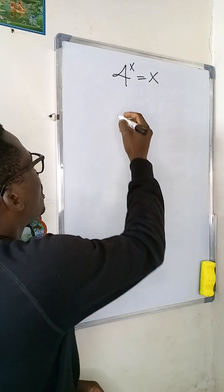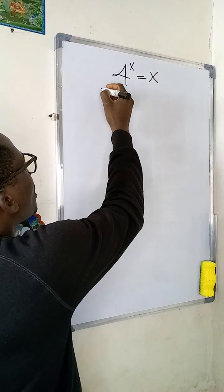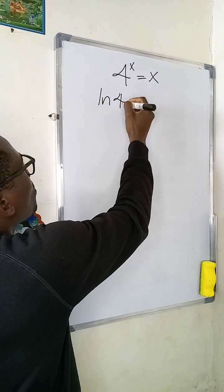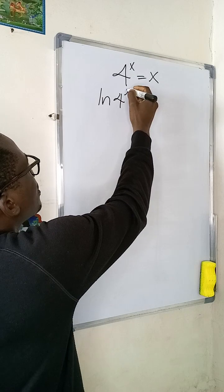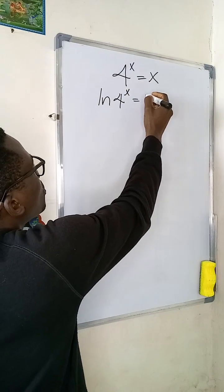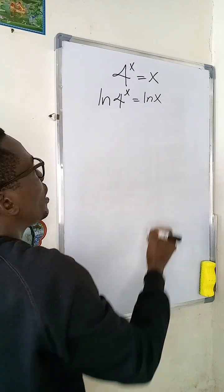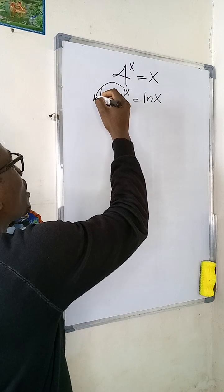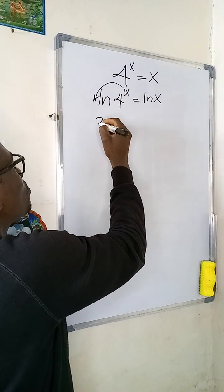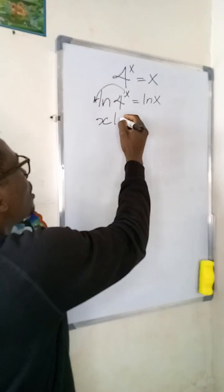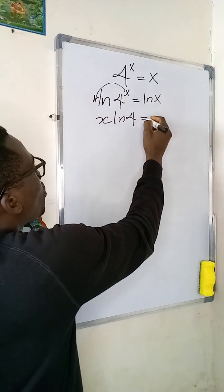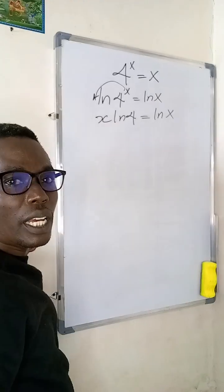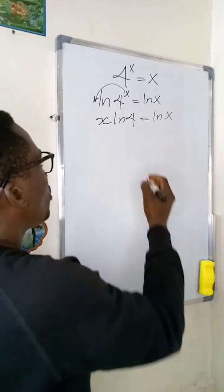The first step is to take the natural log of both sides. So I'll have the natural log of 4 to the power of x equal to the natural log of x. Now according to log rules, this will come down and give me x times ln(4) equal to ln(x).